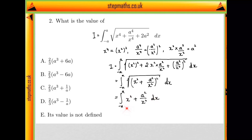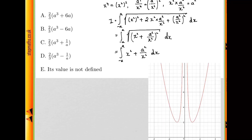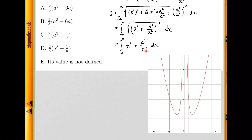Now you might think this looks like something we can integrate. But let's think a bit more about the function x squared plus a squared over x squared. If we think about what this function looks like, it takes this sort of shape, and we can see that at x equals zero, it goes shooting off to infinity. So this function we're trying to integrate isn't actually defined at x equals zero, because we're dividing by x squared — when x is zero, we'd be dividing by zero, which doesn't make sense.